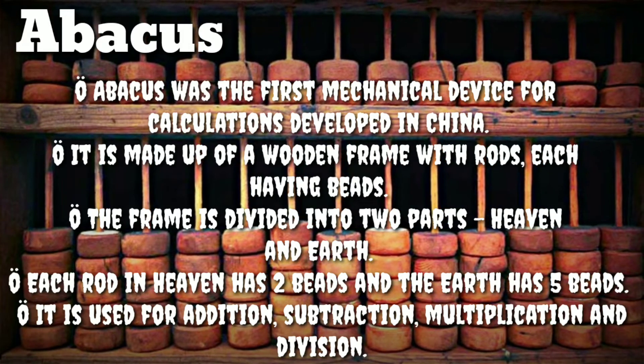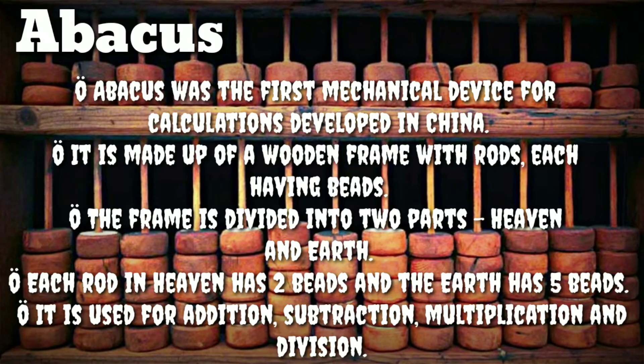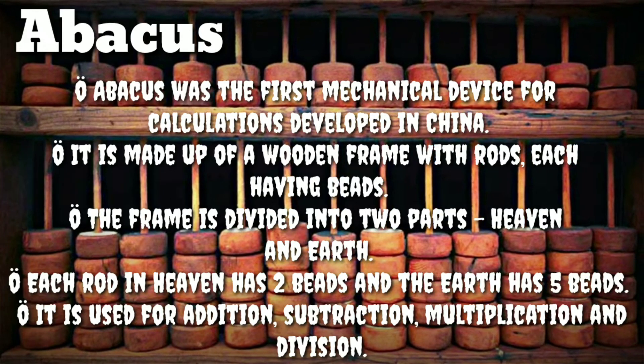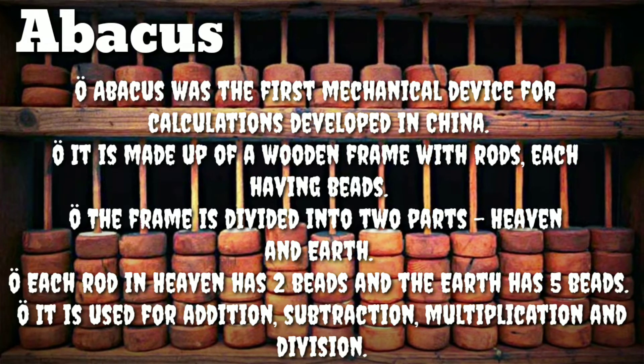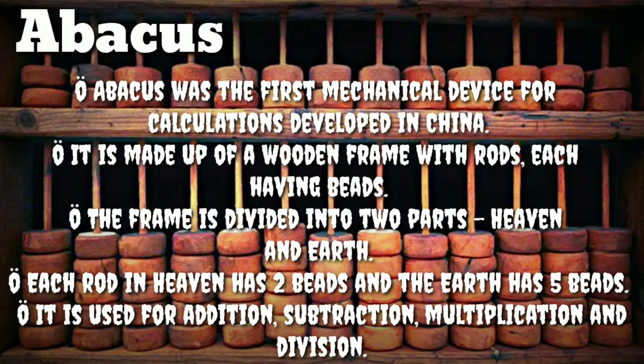Each rod in heaven has two beads and the earth has five beads. It is used for addition, subtraction, multiplication, and division.